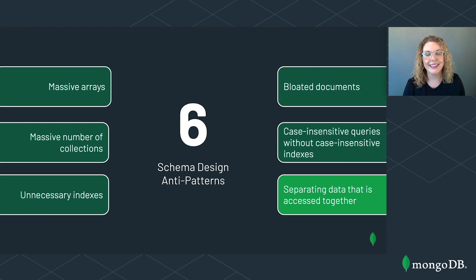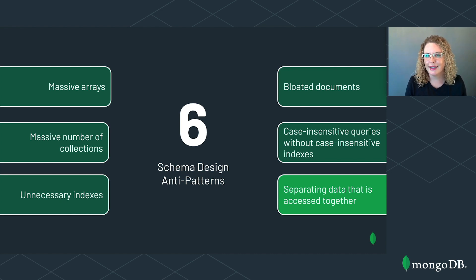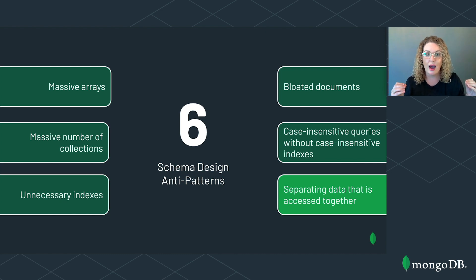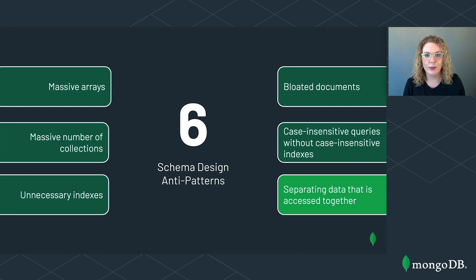Today's anti-pattern is my favorite one, as it brings together concepts from several anti-patterns. Now if you have a relational database background, normalizing data can begin to feel a bit like second nature to you. Your instinct may be to split related data into different pieces in order to optimize for space or perhaps to reduce data duplication. However, separating data that is frequently accessed together is actually an anti-pattern in MongoDB.